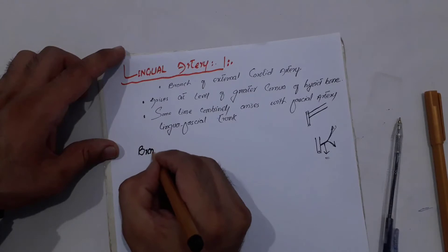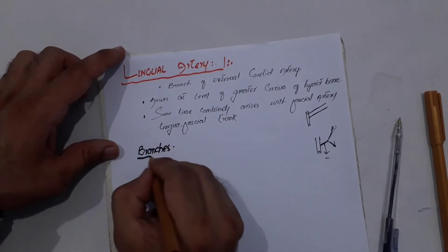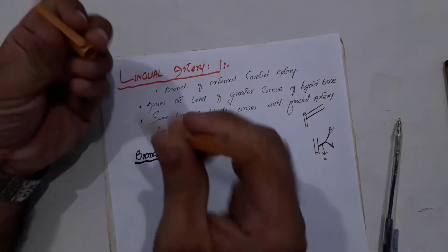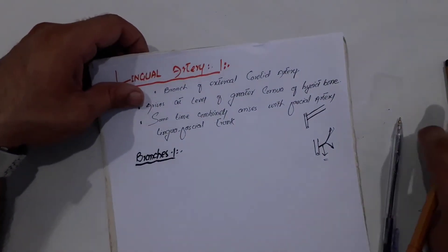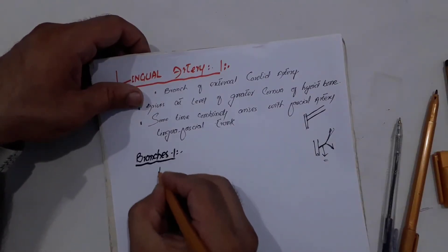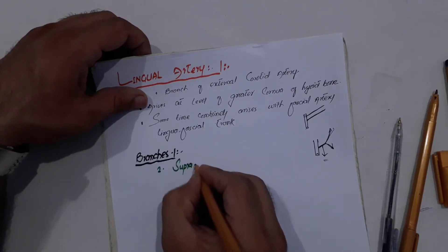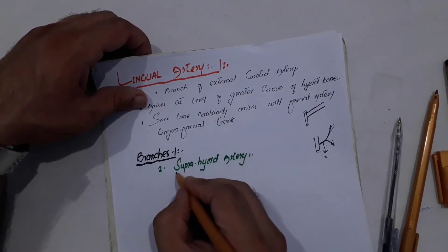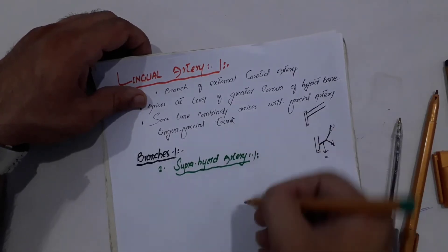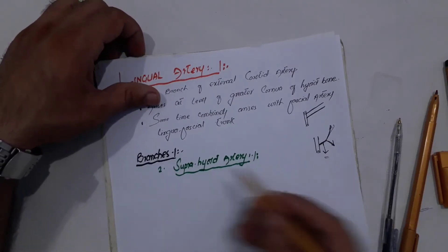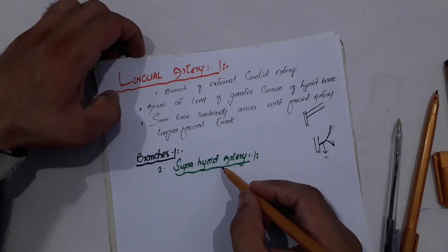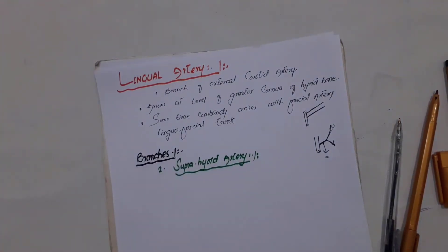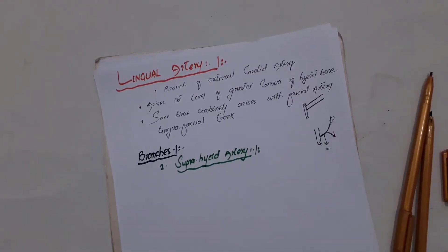Let's discuss the branches of the lingual artery. The first branch that arises is the suprahyoid artery. When we were discussing the superior thyroid artery, there was an infrahyoid artery running below the hyoid bone. This suprahyoid artery arises and moves towards the superior surface of the hyoid bone.